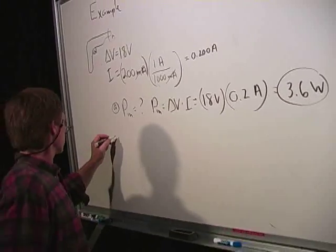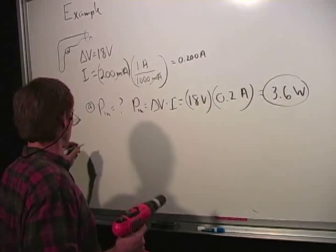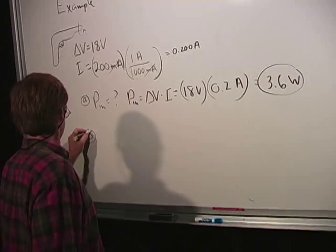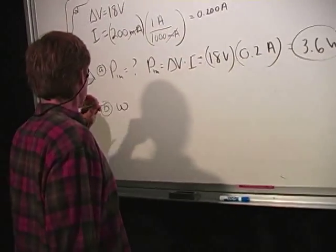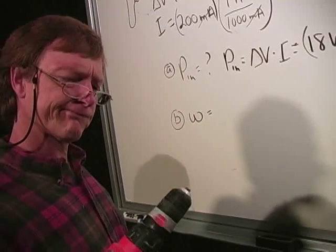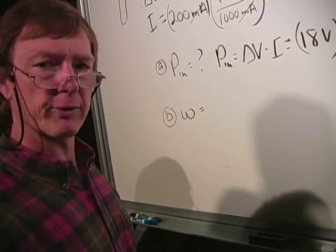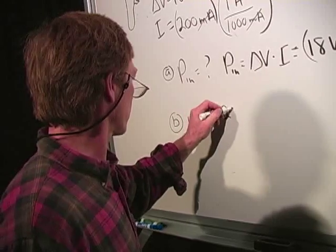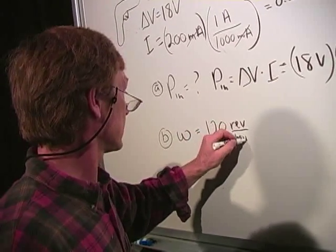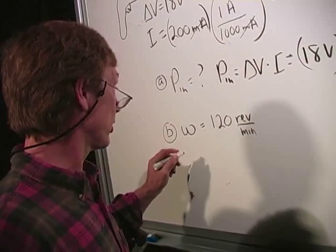Output, let's say I've got an angular velocity of 120 revs per minute, 120 revolutions or RPM. And first off, what is that in radians per second?